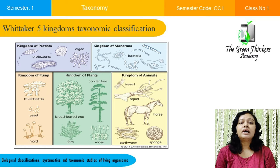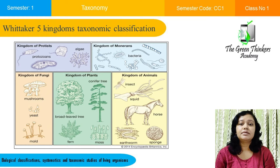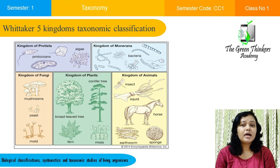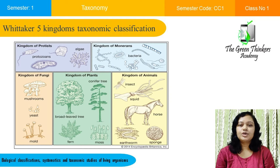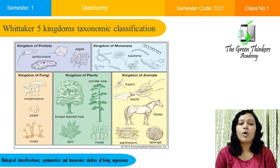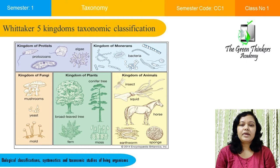Whittaker in 1969 first developed the Five Kingdom Classification System, dividing all organisms into five kingdoms: Kingdom Protista, Kingdom Monera (Bacteria), Kingdom Plantae, Kingdom Animalia, and Kingdom Fungi. Kingdom Protista includes all eukaryotic organisms that are not plants, fungi, or animals. Kingdom Monera encompasses all prokaryotic organisms. Later in 2015, Kingdom Protista was further divided into two kingdoms: Kingdom Protozoa and Kingdom Chromista.